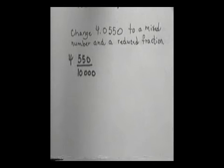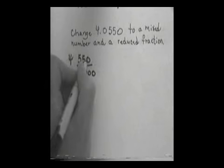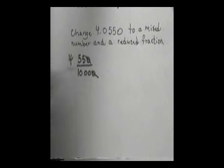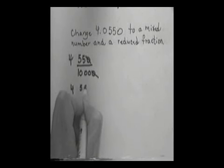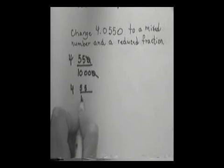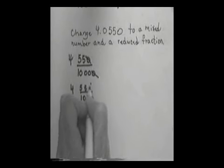So I have 4 and 550 ten-thousandths. Now that's my mixed number, but it's not reduced, so let's go ahead and reduce that mixed number. First thing I'd like to do is mark a zero off of each. So I have 4 and 55 over 1,000 now. And then I know both of those are divisible by 5.